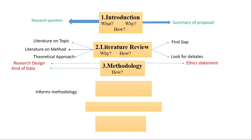Then, after the research design and ethics statement, there is the kind of data — whether primary data or secondary data — you are using in your research project. You need to discuss the collection procedures and provide a valid justification for the different procedures you are going to use for data collection. The last section of the methodology chapter is costs and funding: what will be the costs and what will be the sources of funding for the research project.